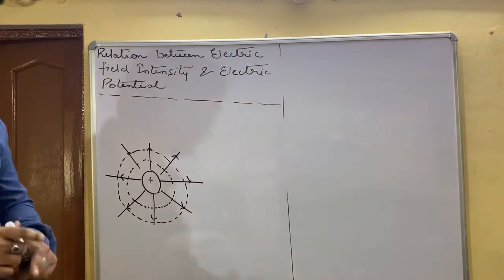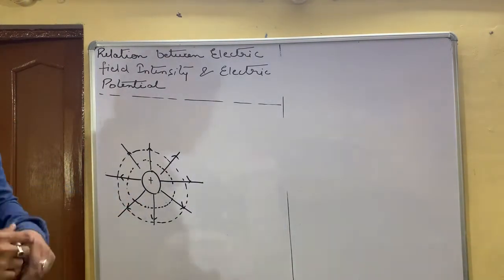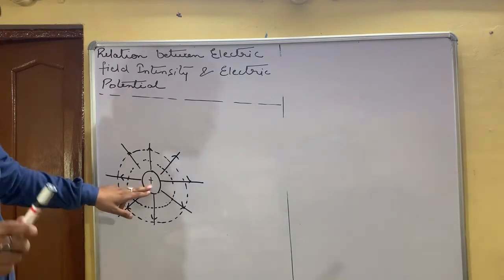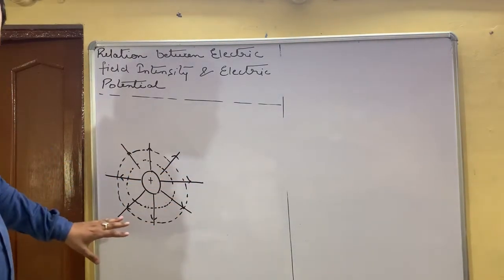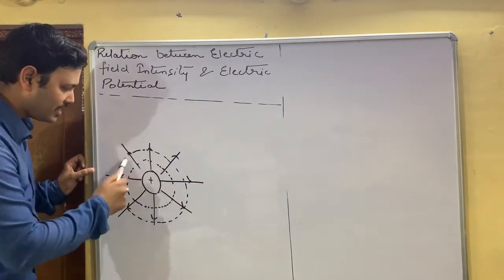Since we have already seen this diagram in the previous derivation, we are having an isolated positive charge, the electric field lines are radially outward, and this is the equipotential surface.